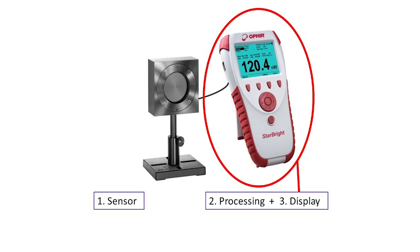A typical handheld laser power meter combines the processing and the display in one instrument. An externally connected sensor produces an output signal.